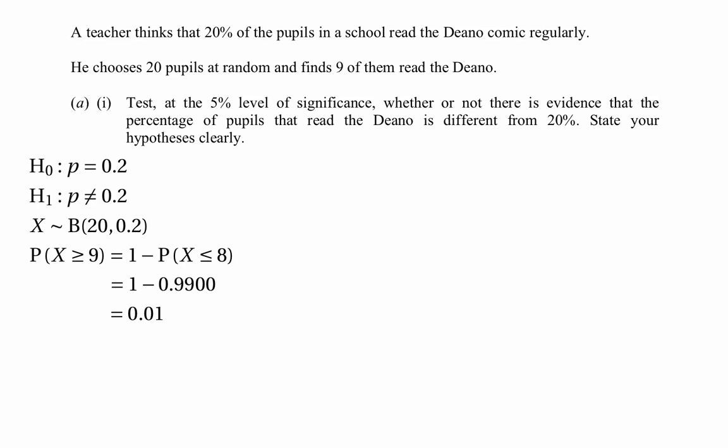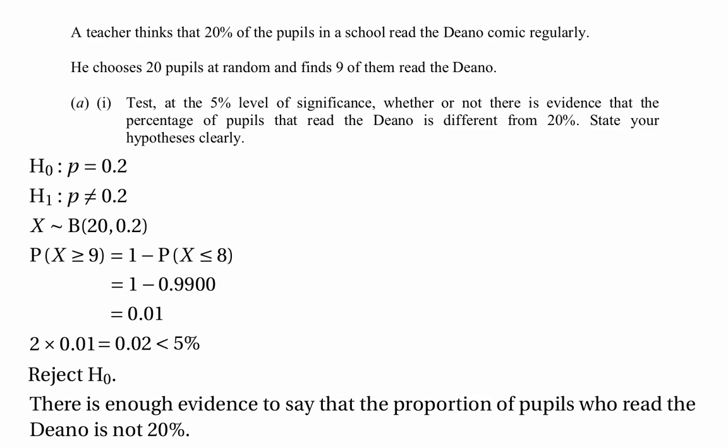Remember this is a two-tailed test, so there are two ways to reject the null hypothesis: values much bigger than expected, or values much smaller than expected. We've only found the probability for the upper tail, so we double 0.01 to get 0.02. Since 0.02 is less than 5%, we have a probability lower than our significance level, so we reject the null hypothesis. In context, we have enough evidence to say the proportion of pupils who read the Dino is not 20%.